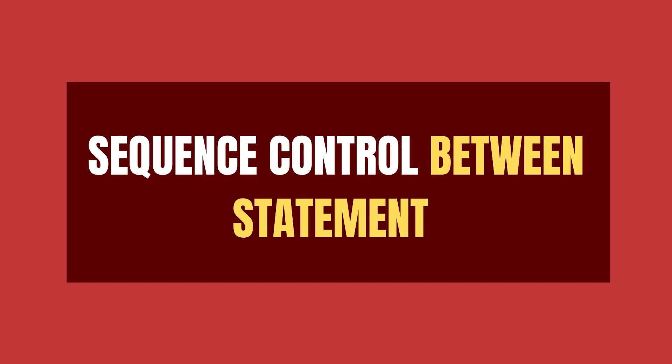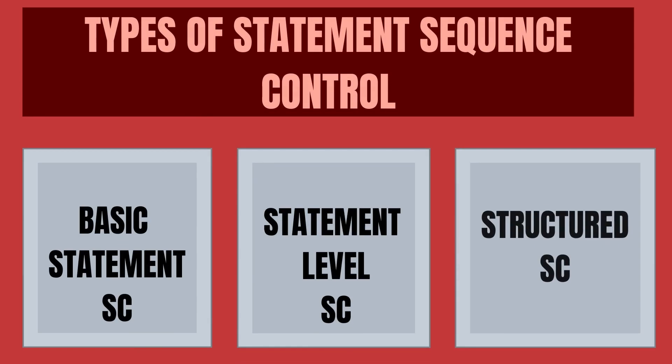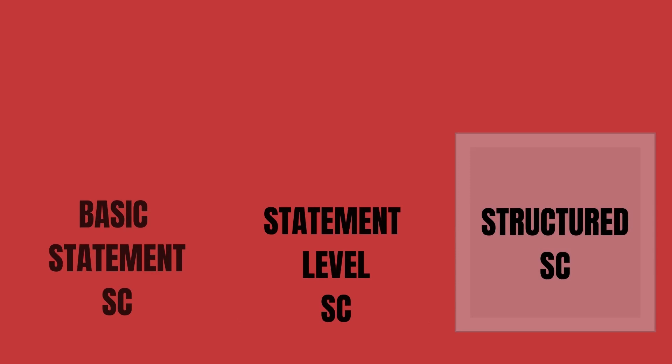Let's see how sequence is controlled between statements. There are three types of statement sequence control: first, basic statement sequence control; second, statement level sequence control; and the last, structured sequence control. Now let's understand each of them.